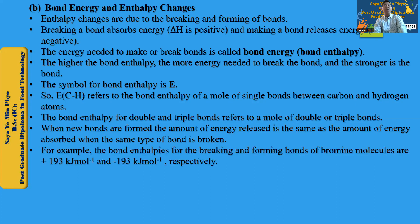For example, for the breaking and forming of a bond, the value is plus 193 kilojoules per mole, and minus 193 on the other side. When the bond is broken, the energy absorbed is plus 193 kilojoules per mole.